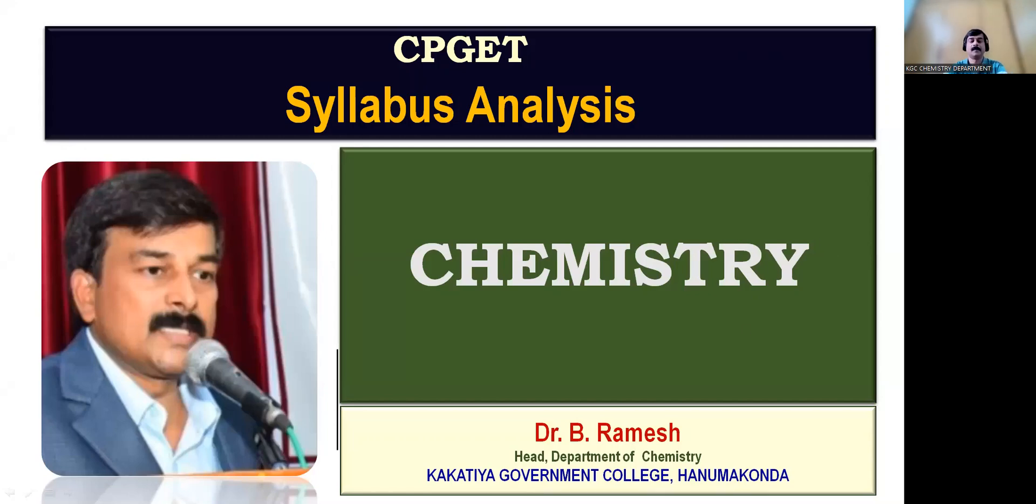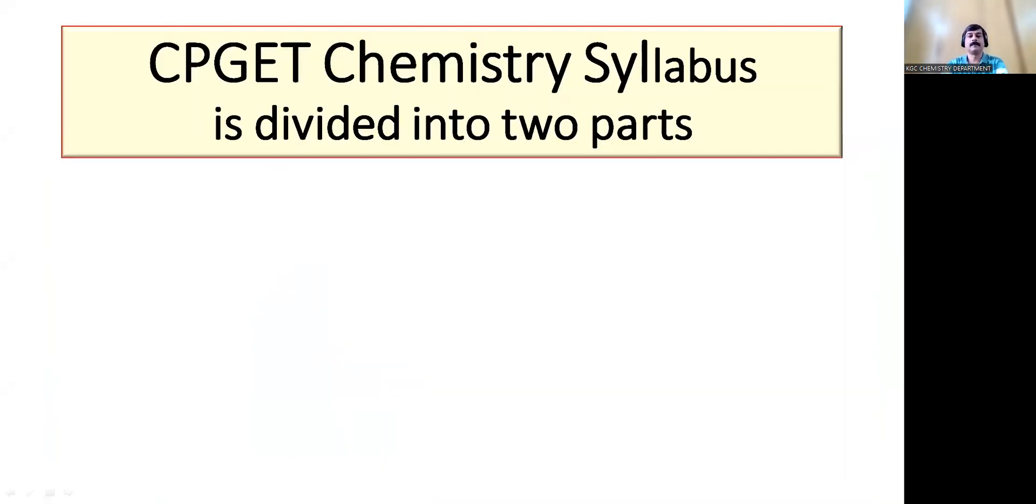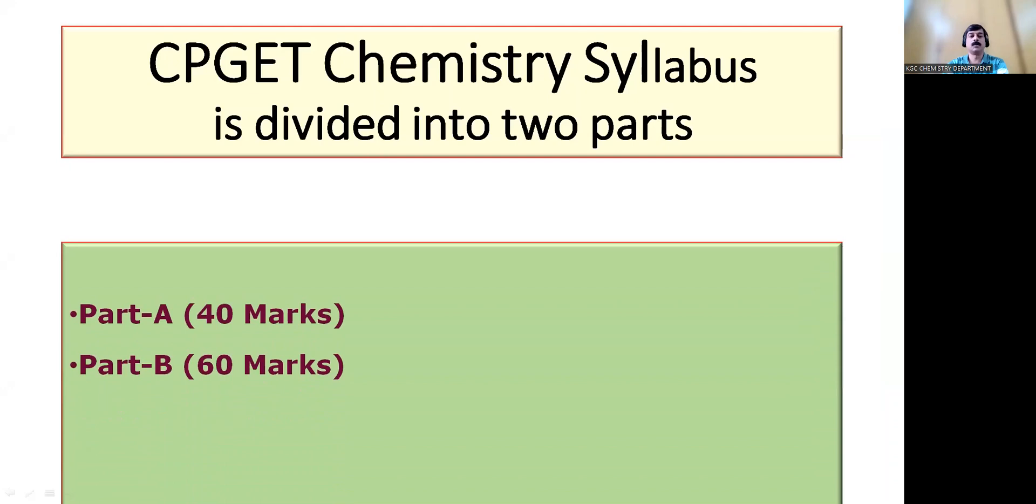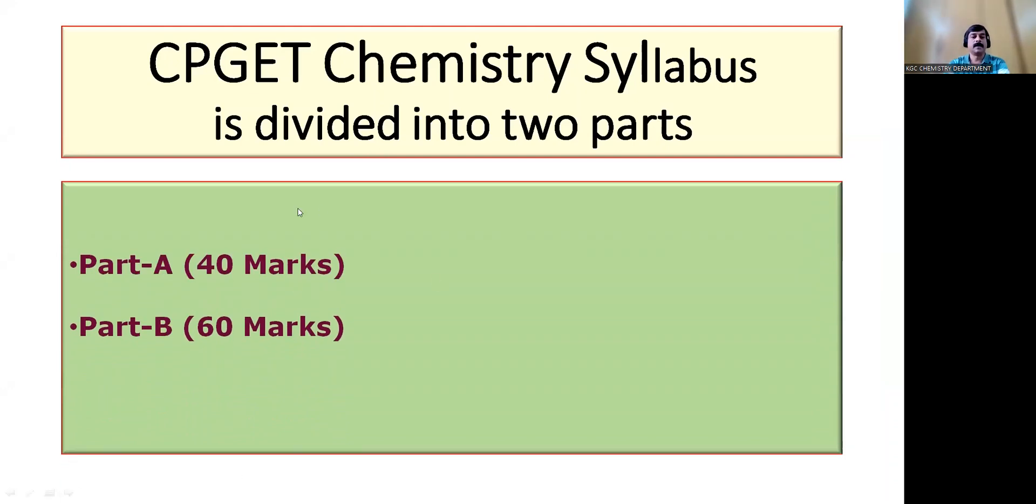Hello everyone. Let's look at the CPGET chemistry syllabus and the subject-wise way it is. So basically CPGET chemistry syllabus is divided into two parts. Part A consists of 40 marks and part B consists of 60 marks.